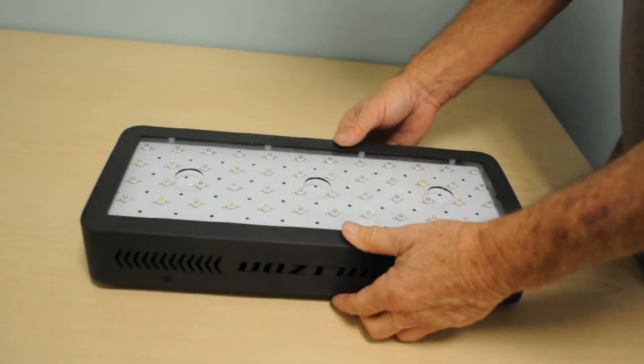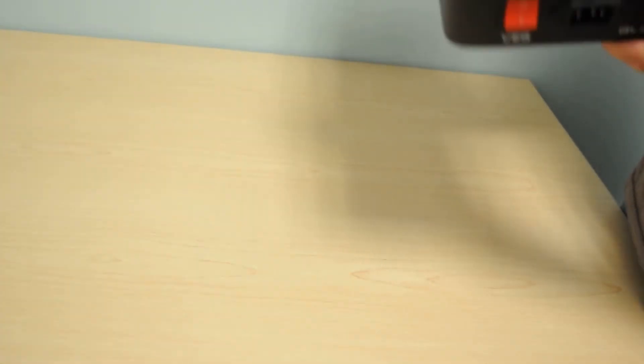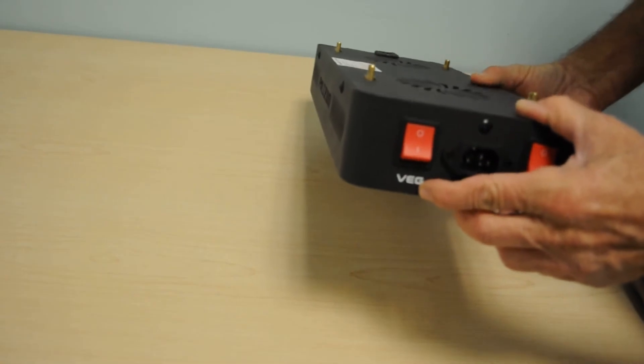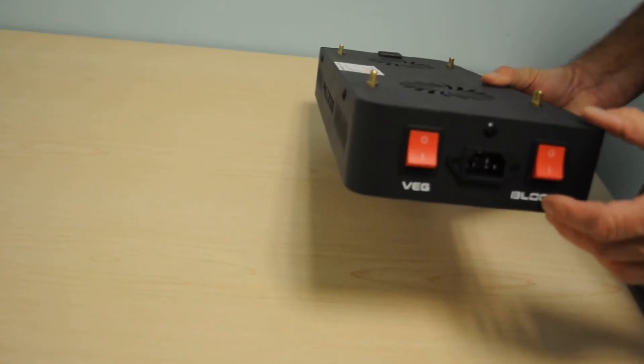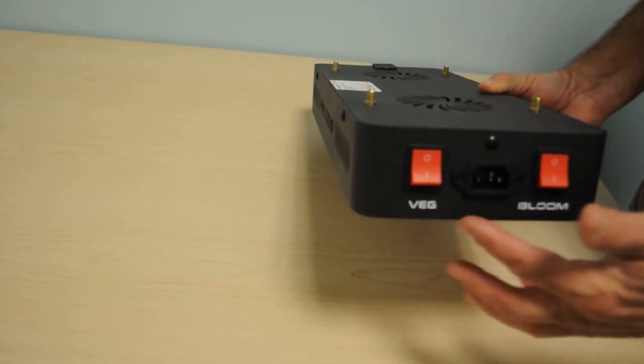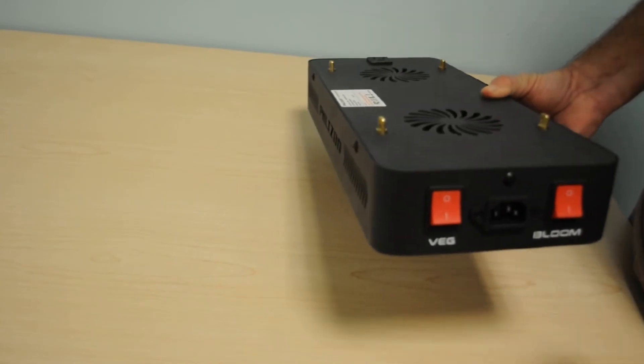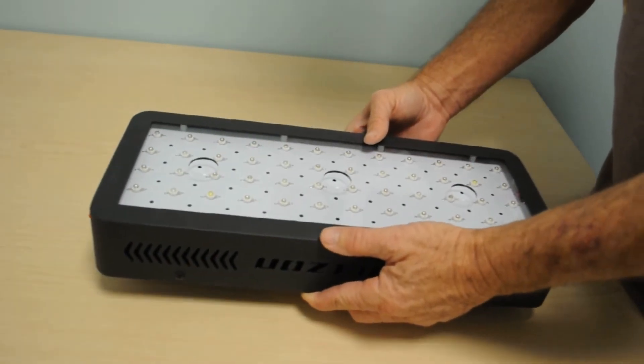The nice feature that it has is the bloom and veg switches. So the veg would be primarily blue light, bloom would be primarily red light, and then the two together would give the maximum watt output. So we'll check it out here. We'll see how the light performs.